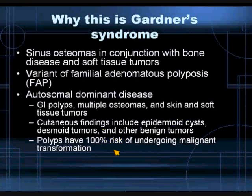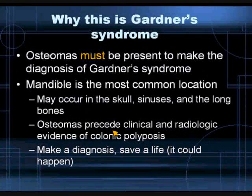Here's the key caveat: there is a 100% risk of GI polyps in these patients undergoing malignant transformation. Osteomas must be present to make the diagnosis of Gardner's syndrome. Within the head and neck, the mandible is the most common location of these osteomas, but they may occur in the skull, sinuses, and actually in long bones as well.